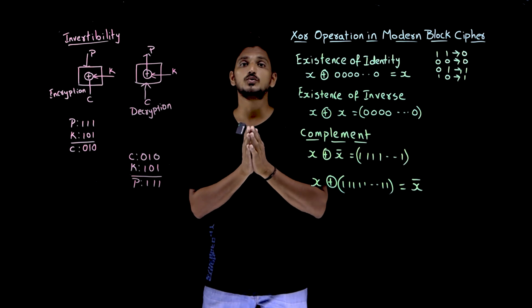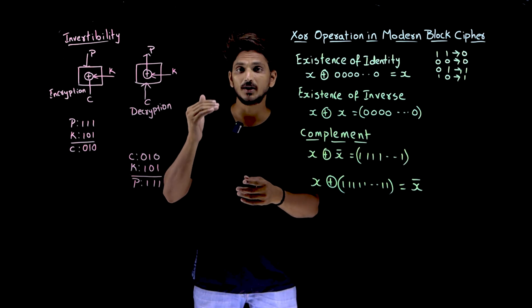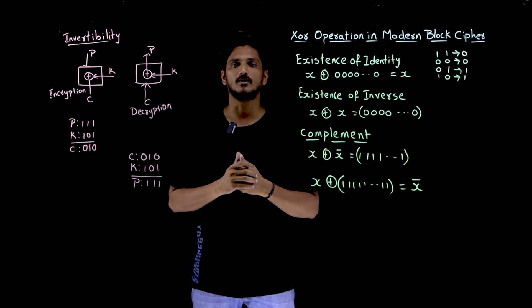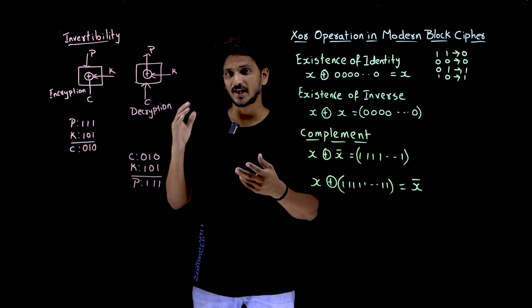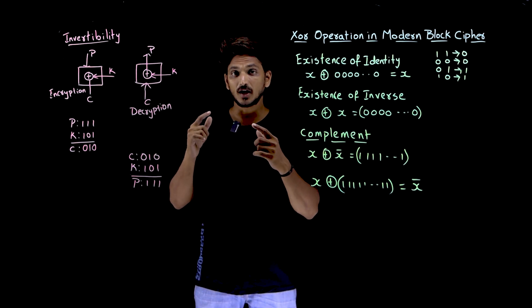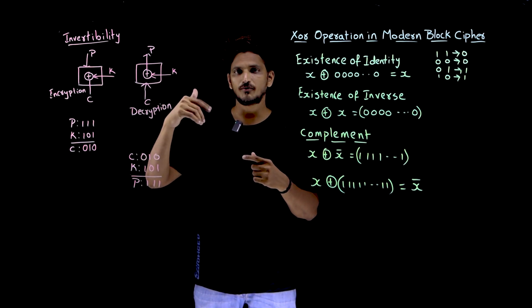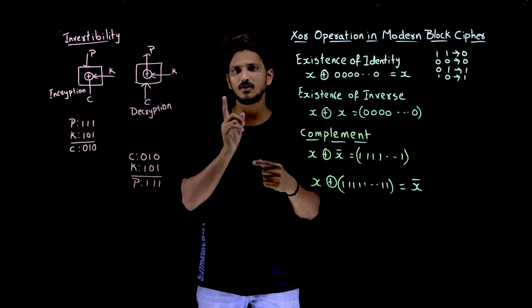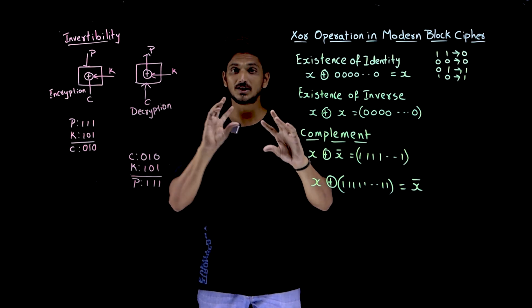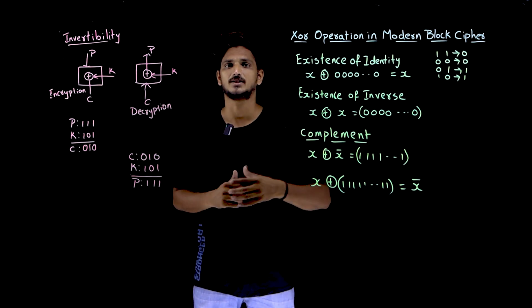Similarly XOR operation can be used as invertibility in our modern block cipher. In our previous classes we discussed S box, P box, they are all invertible, means during the encryption, if you use the key and the same key if you use it in the decryption, it is invertible. You are going to get the plain text.